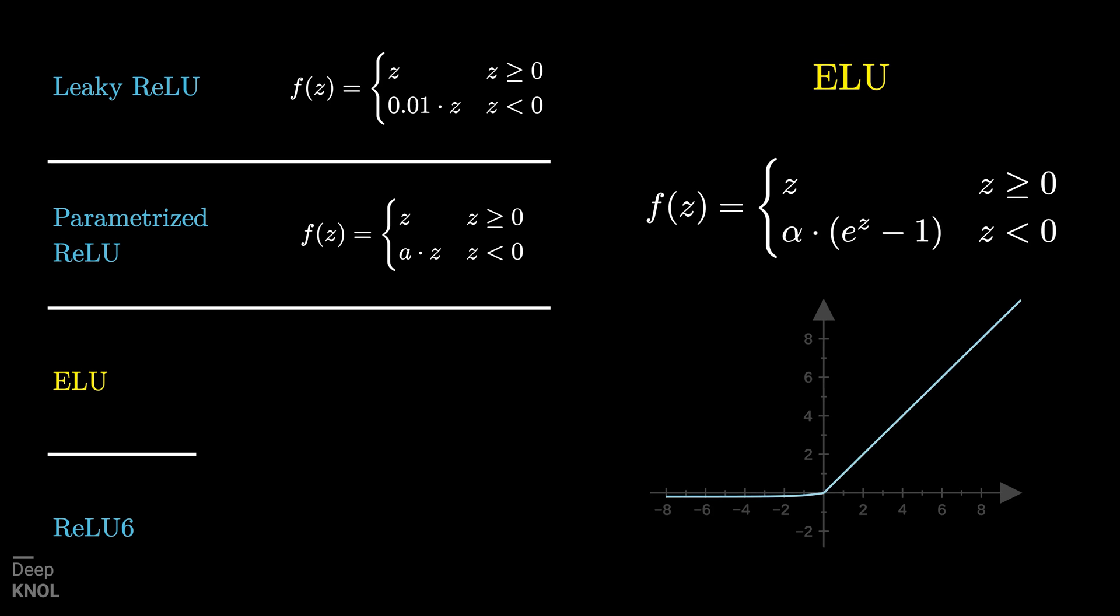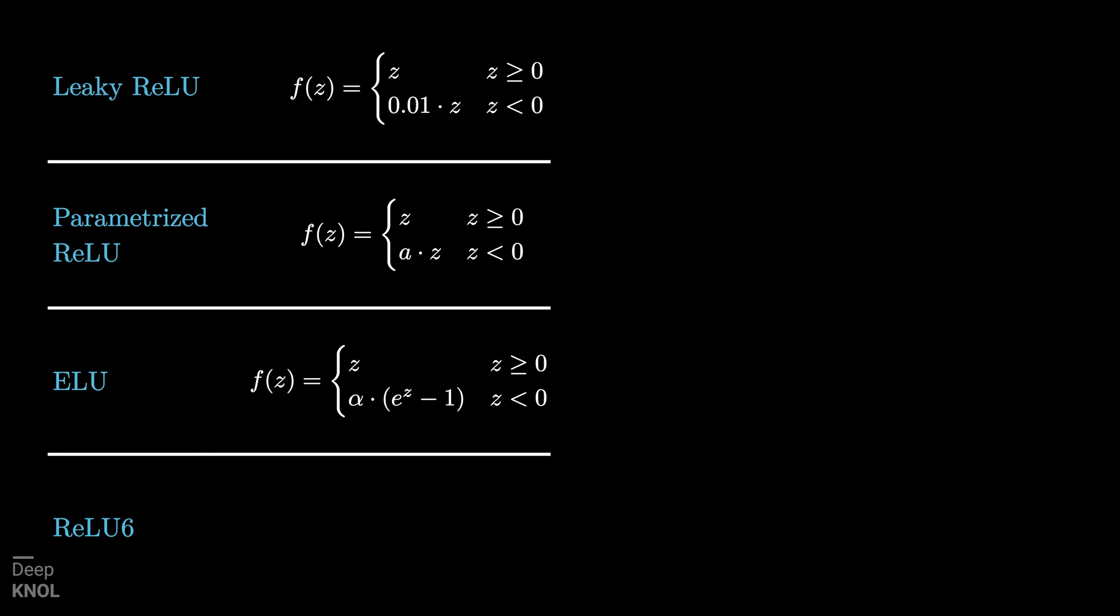ELU. This variation mimics the vanilla ReLU quite closely while also being truly differentiable everywhere. ReLU6. This one is bounded both for positive and negative values of Z and has slope of 1 in range of 0 to 6.